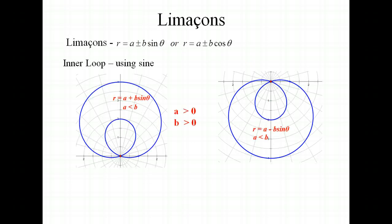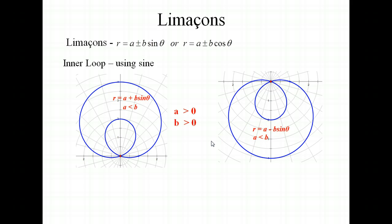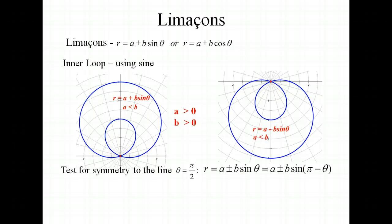Let's focus in on the inner loop graph. Remember that with the inner loop graph, your a value is less than b, or you could say that a divided by b is less than 1. If you have a positive sign in between a and b and you have a sine graph, then the majority of your graph is going to be above the polar axis. And if you have a minus sign in between, the majority of your graph is going to be below the polar axis. Now we also want to look at some symmetry of the graph. These have symmetry with the line theta equals pi over 2. One of our symmetry tests is to replace theta with pi minus theta, and the sine of pi minus theta is the same as sine of theta. So that shows it does have symmetry to the line theta equals pi over 2 for all graphs that involve sine.